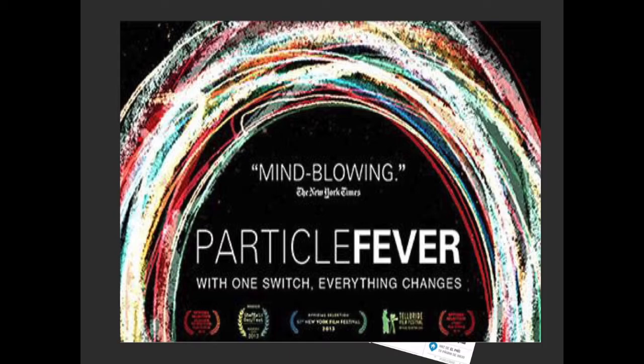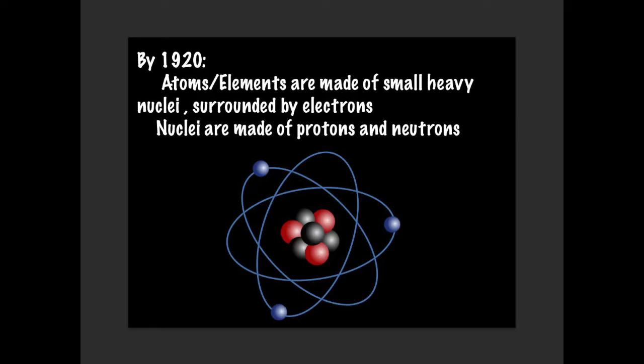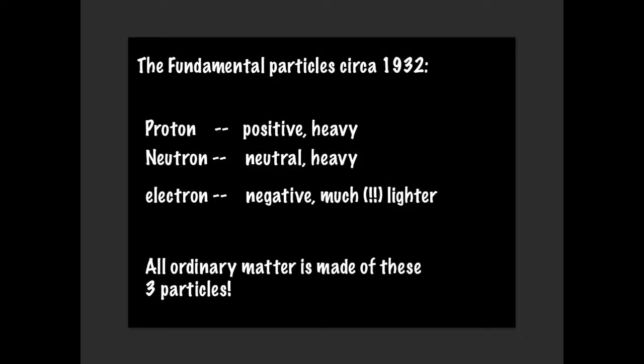So to understand the importance of the Higgs boson, we have to go back 150 years to the leading scientific discovery of the late 1860s, which was Dmitry Mendeleev's putting together of the table of the elements. But within 50 years, we had realized that atoms or elements are made of small, heavy nuclei surrounded by electrons. And those nuclei are made of particles called protons, which are positive, and neutrons, which are neutral. So up until 1932, the fundamental particles of nature were just three.